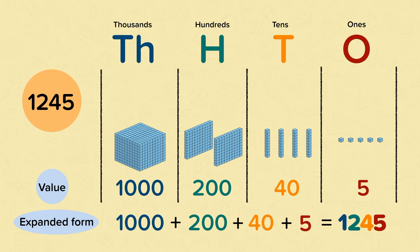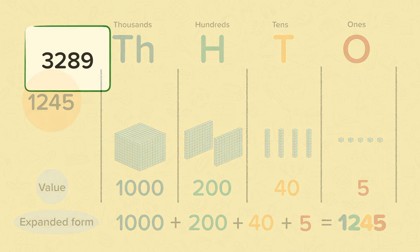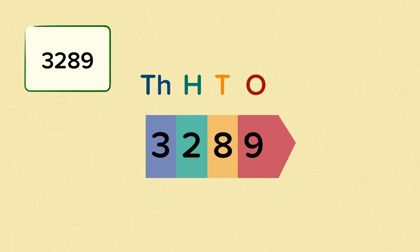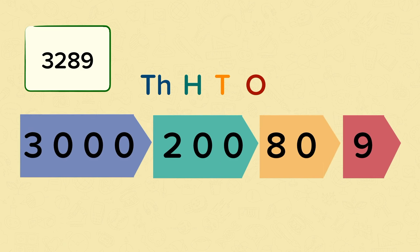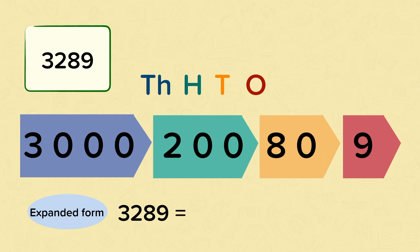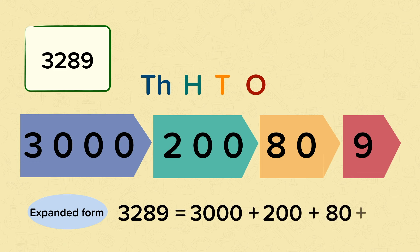Or it could be written the other way around to look like this. Now let's have a look at this number: three thousand two hundred and eighty-nine. We're going to use place value cards to help us understand the value of each digit. If we pull this number apart, you can see it is made up of three thousand, two hundred, eighty and nine. So written in the expanded form: three thousand two hundred and eighty-nine equals three thousand, add two hundred, add eighty, add nine.